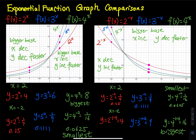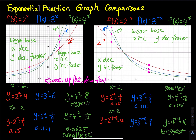Here's an easy way to remember this. For a bigger base, just remember: up fast, down fast. Which function has the biggest base? The 4 to the x, which is in green.